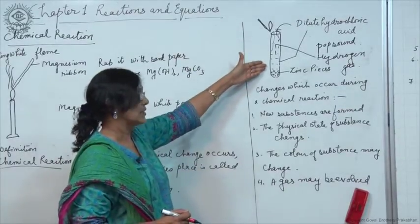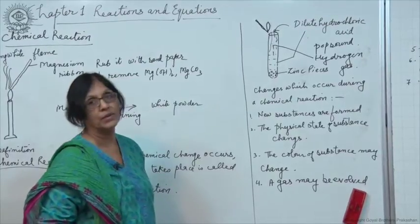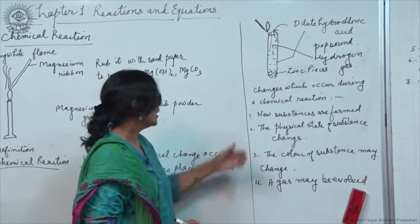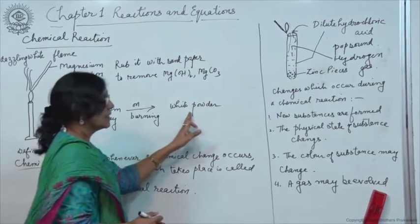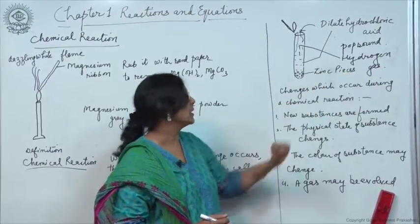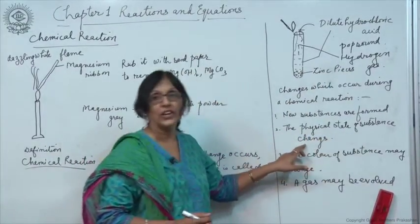Now, let us see what are the changes which occur during a chemical reaction. A new substance has been formed in both the cases. Here, a new substance has been formed. Here also, a new substance has been formed. The physical state of the substance has changed.